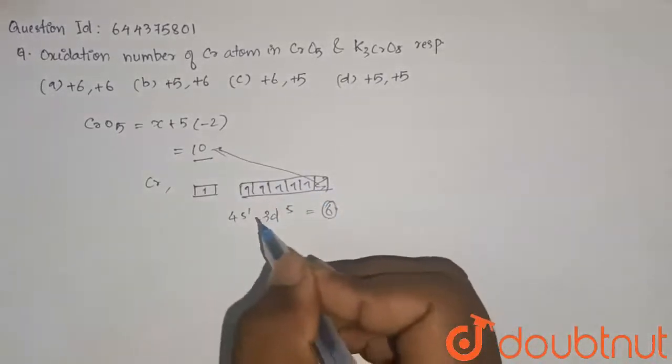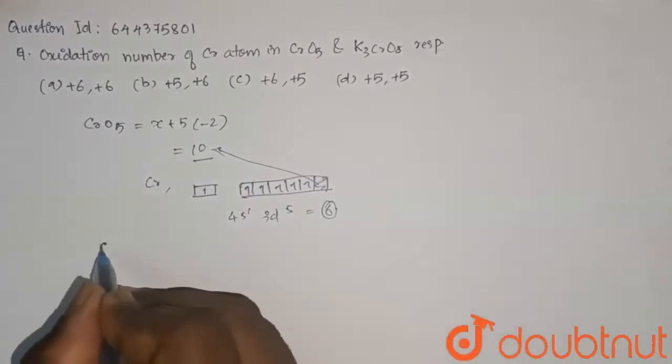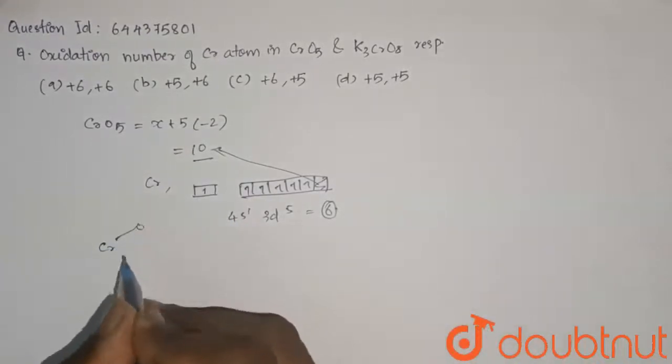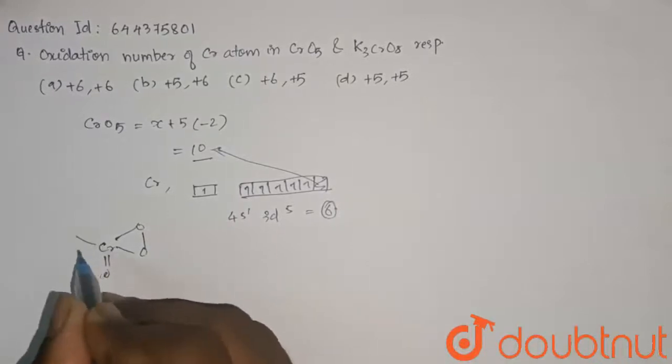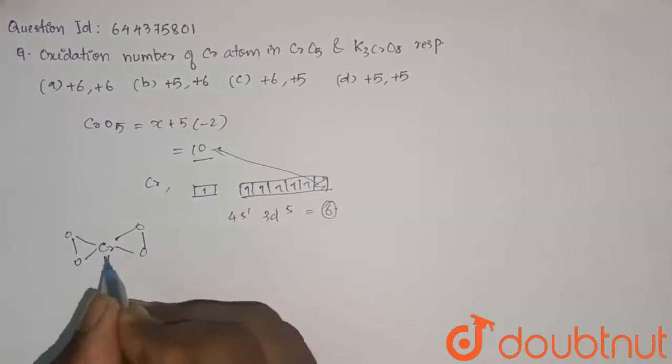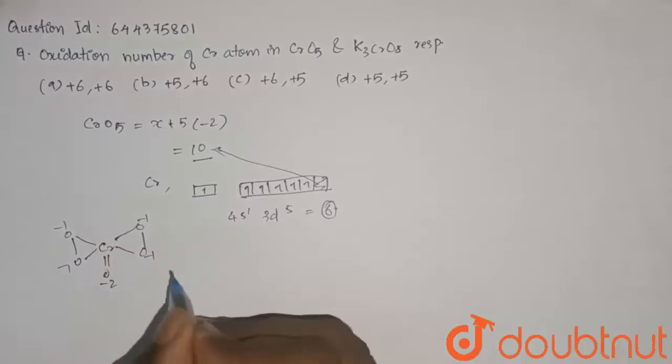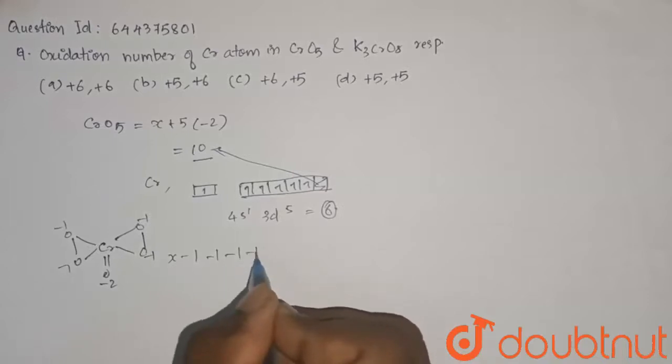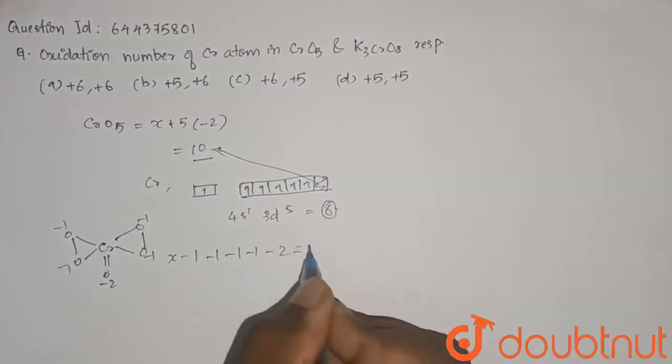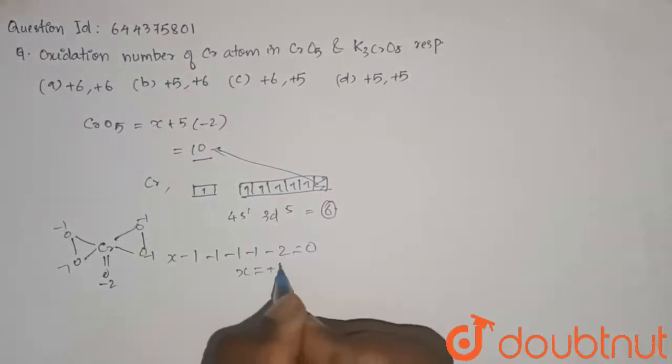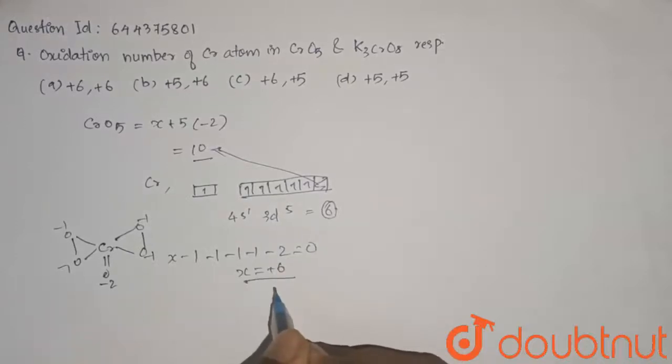Let us find it in a different way. We can draw this Cr in terms of bonds. We have a double bond oxygen and two single bond oxygens. All the oxidation number here is minus 1 and here for the double bond it is minus 2. So let us take X minus 1, minus 1, minus 1, minus 1, minus 2 is equal to 0. So X is equal to plus 6. This is the oxidation number of Cr in CrO5.